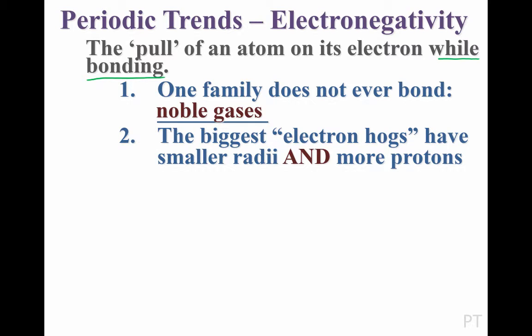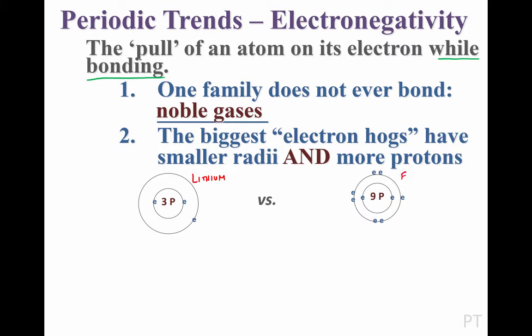To determine the most electronegative elements — or those that I call the electron hogs — we're looking for atoms that have small radii with more protons. Those tend to be the biggest electron hogs. Let's compare lithium to fluorine. Both of these atoms have two shells of electrons; however, fluorine is a bit smaller and has a higher nuclear charge than lithium. For these two reasons, fluorine pulls its electrons better than lithium, and so it has a higher electronegativity.